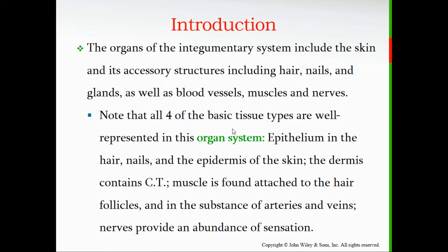The organs of the integumentary system include the skin and its accessory structures. Accessory structures of the skin are going to be hair, nails, and glands. Also embedded within the skin you'll find a lot of blood vessels and nerve endings, which contain individual corpuscles for various forms of stimuli such as touch, pain, temperature, and pressure.